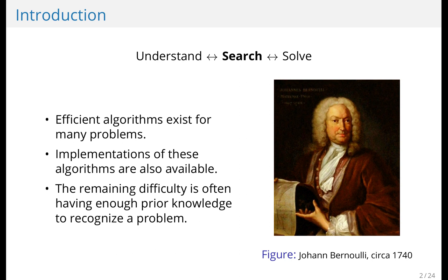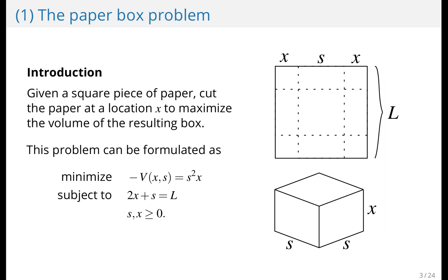So let's look at 10 problems. The first one is the paper box problem. You'd like to cut a piece of paper so that you can fold it to a box with no lid and you would like to maximize the volume. So here we minimize the negative volume, which is the same as maximizing the volume, and this is a high school problem.